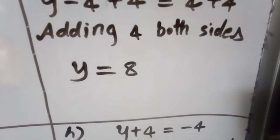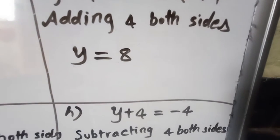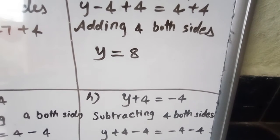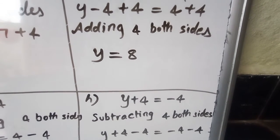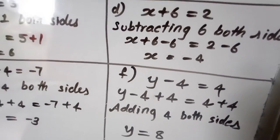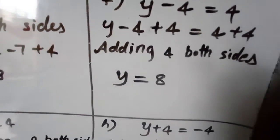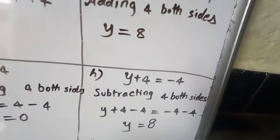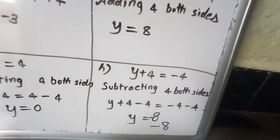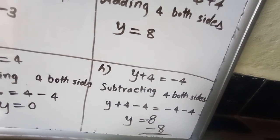Question H (last question): y plus 4 is equal to minus 4. Subtracting 4 from both sides, because plus 4 is there and subtracting will isolate the variable. y plus 4 minus 4 equals minus 4 minus 4. The left side leaves only y. On the right side, when both values carry the same sign, we add and keep that sign: minus 4 minus 4 gives minus 8. So y is equal to minus 8.